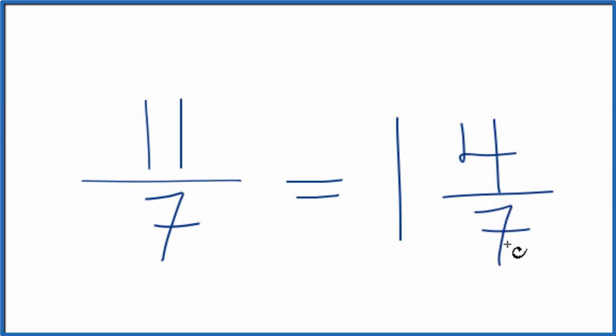We can check that. 1 times 7, that's 7 plus 4, that's our 11 here, and then we keep the denominator the same. So the improper fraction, 11 sevenths, it does equal a mixed number, 1 and 4 sevenths.